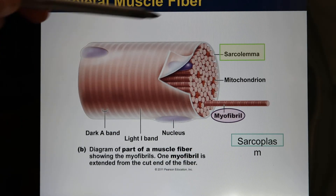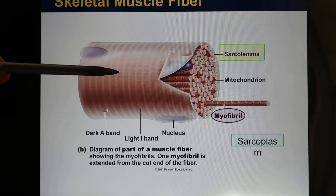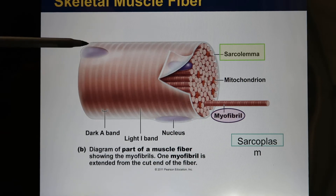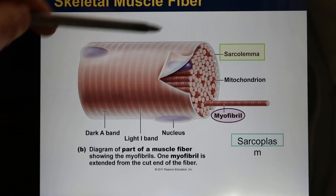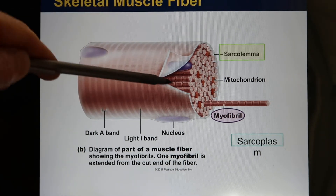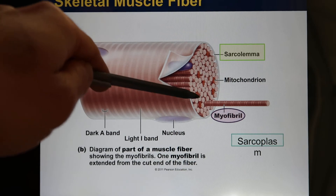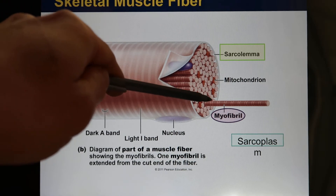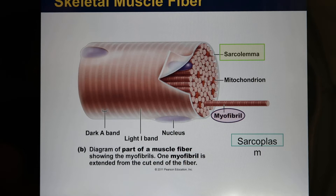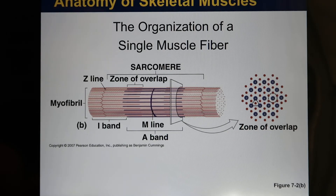Inside the muscle fibers — this is the cellular level. If you forget which level you're at, just look at the nucleus. The nucleus tells you that's the cellular level — that's the muscle fiber, the muscle cell. These are the sarcomeres. Looking inside, you see those small filaments — the myofibril.